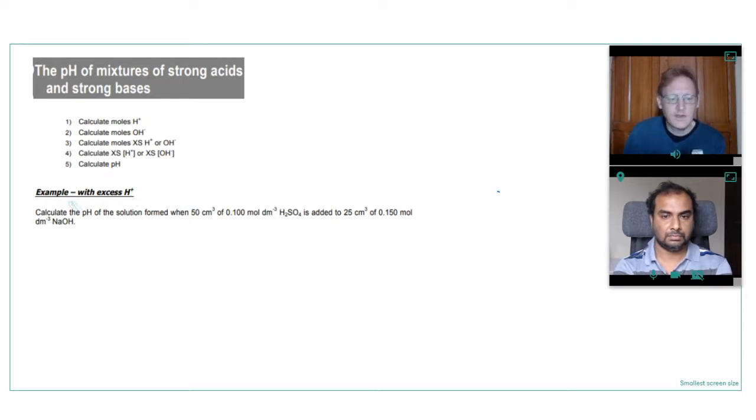So our first example here, we're going to have an excess of acid. So we've got to calculate the pH of the solution formed when 50 centimeters cubed of 0.1 moles per decimeter cubed of sulfuric acid is added to 25 centimeters cubed of 0.15 moles per decimeter cubed of sodium hydroxide. So the first thing we need to do is work out the moles of the acid and of the base. So we'll use our equation for calculating moles of solutions.